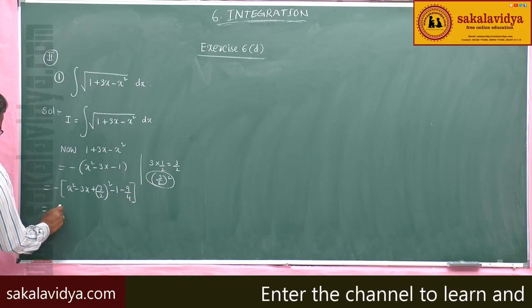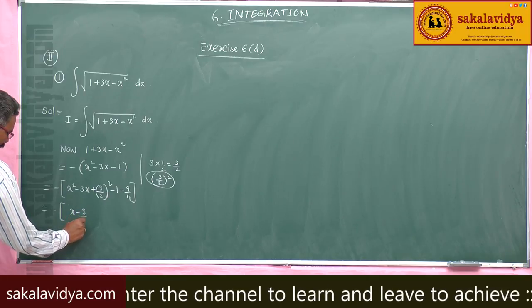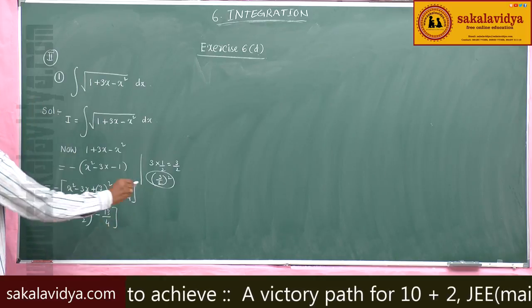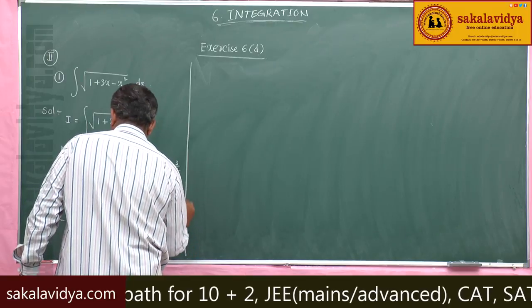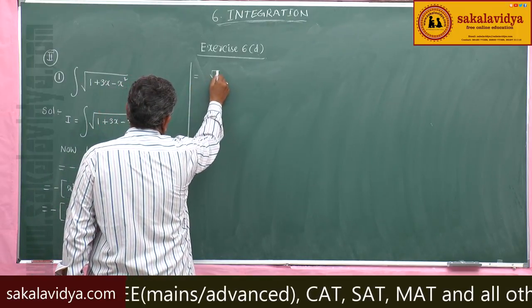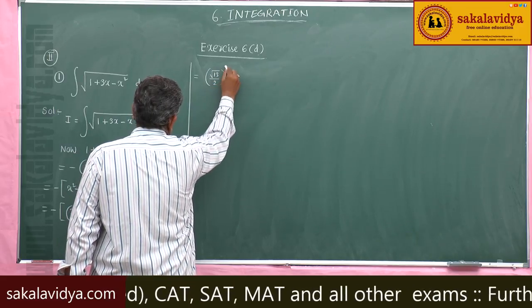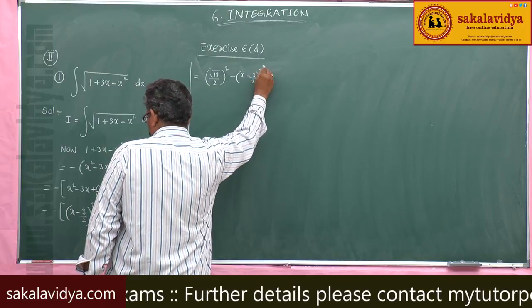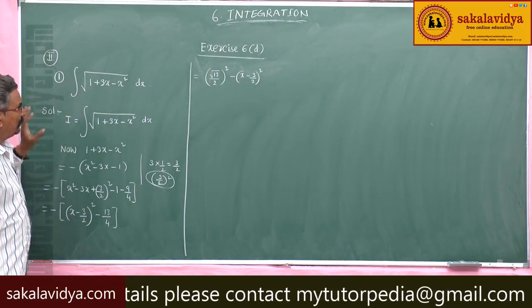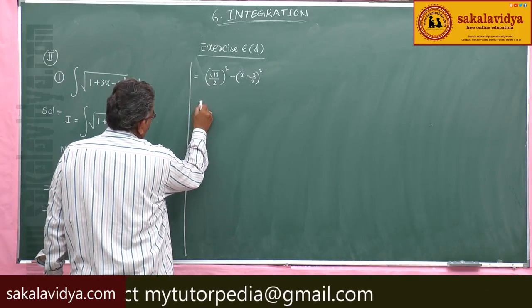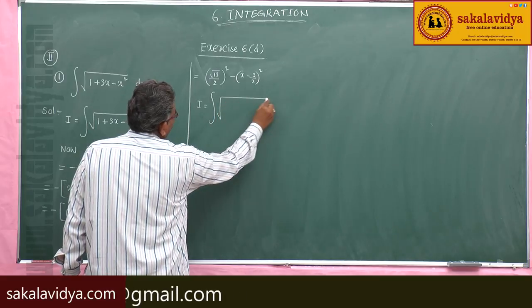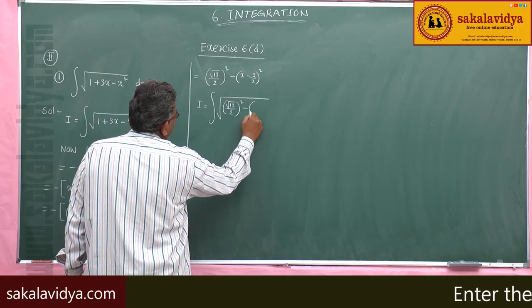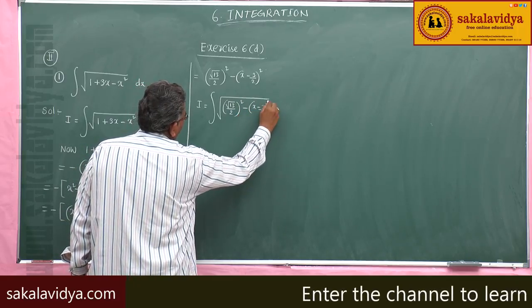So this can be written as (√13/2)² - (x - 3/2)². Therefore I equals integral of √[(√13/2)² - (x - 3/2)²] dx.